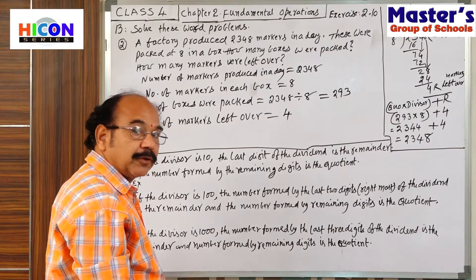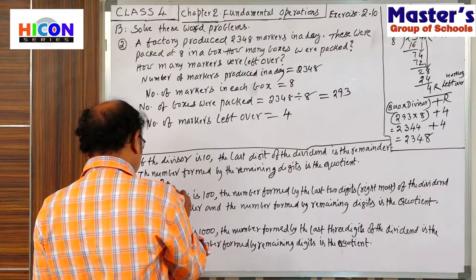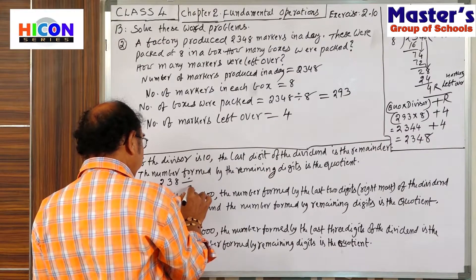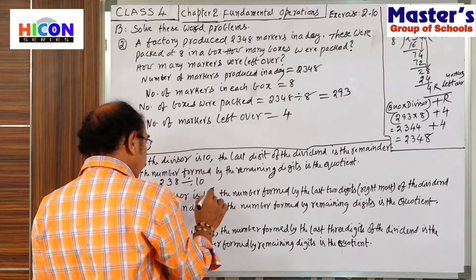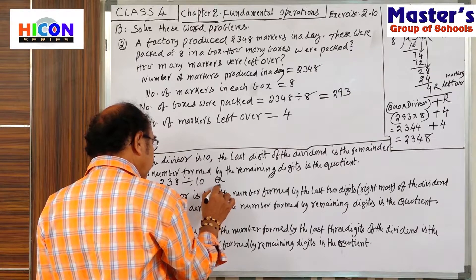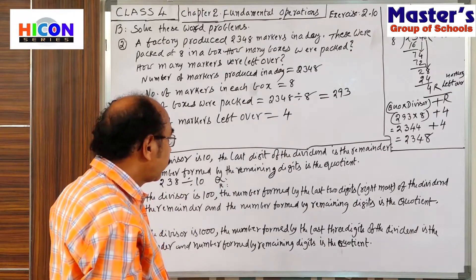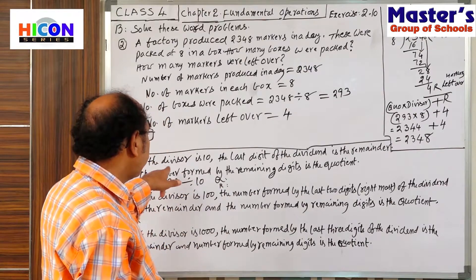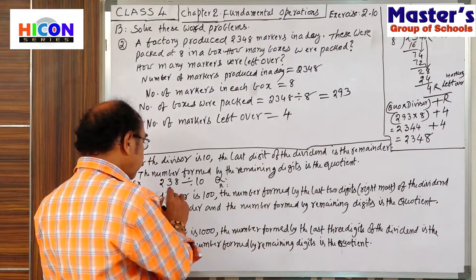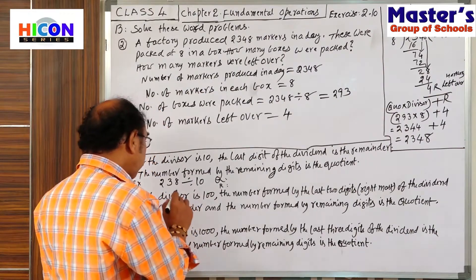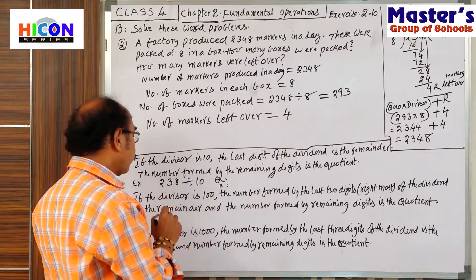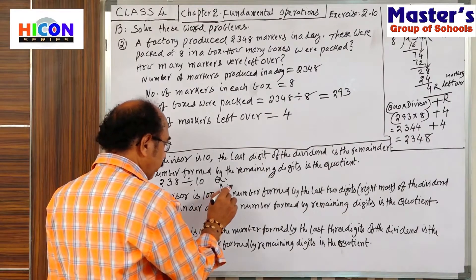For example, 238 — when it is divided by 10, what is the quotient and what is the remainder? About the remainder, what was said? The last digit of the dividend. 238 is the dividend. What is the last digit? 8. That is the remainder. So, remainder is 8.